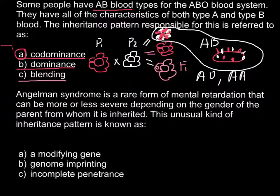Now let me move to the second question. Angelman syndrome is a rare form of mental retardation that can be more or less severe depending on the gender of the parent from whom it is inherited. This unusual kind of inheritance pattern is known as — and here we have three answers to choose from. Let me start with answer C: incomplete penetrance.